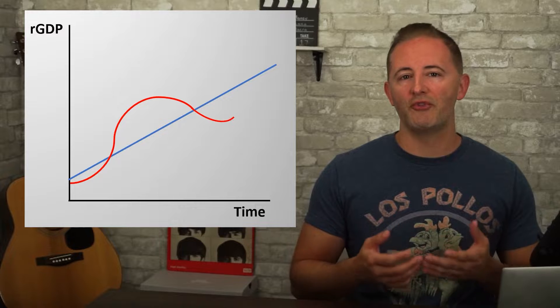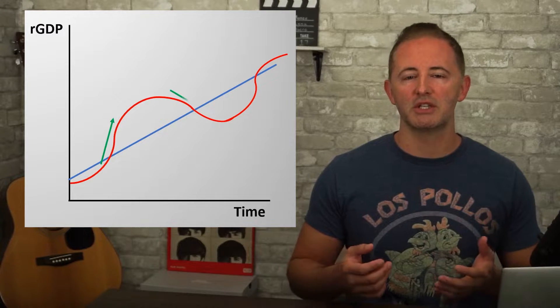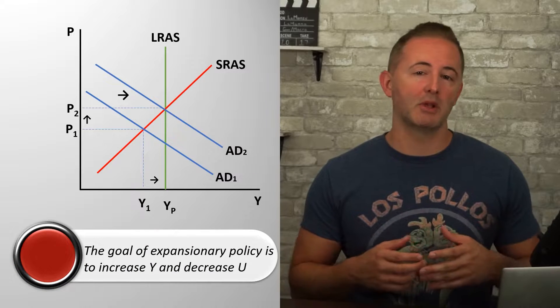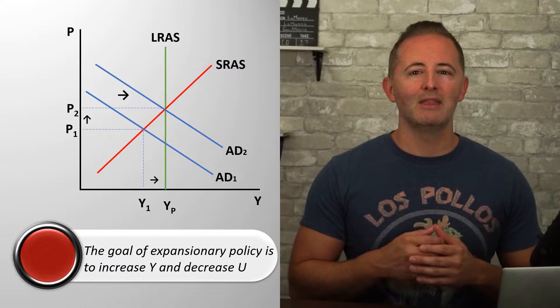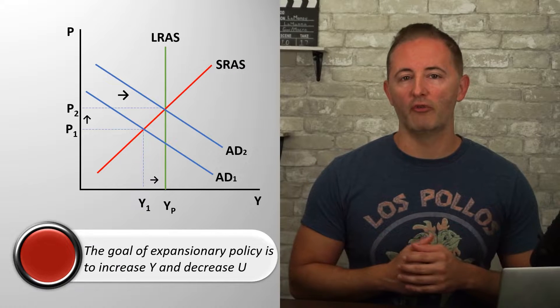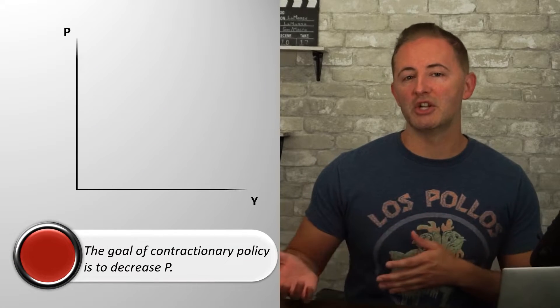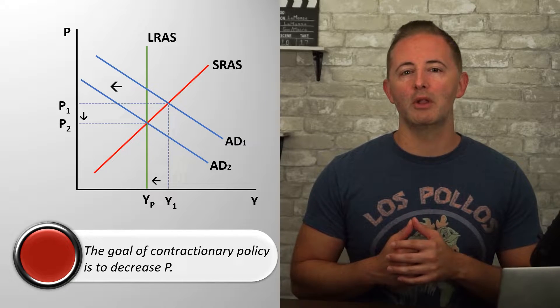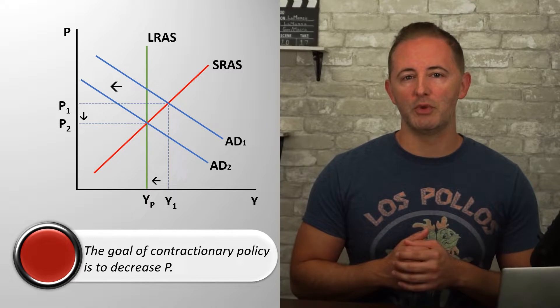I've got some good news for you. A lot of this lesson is basically a review, so that's awesome. We know that an economy has business cycles and that it goes through phases of expansions and contractions, and we know that there is often a desire by policymakers to attempt to smooth out the business cycle through active stabilization policies. Specifically, when an economy is in a recessionary gap and actual output is less than potential output, then expansionary policy is called for, whereas in response to inflationary gaps, where actual output is greater than potential output, then contractionary policy will be used.